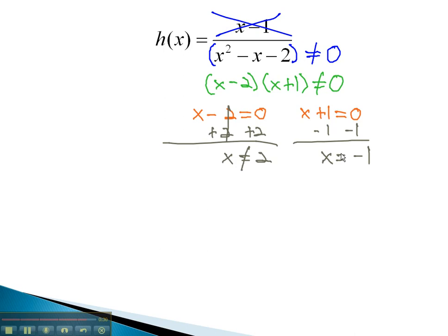We'll say that x cannot equal 2, and x cannot equal negative 1, because if we were to plug those values into this function, we would end up with 0 in the denominator, and that would be undefined. Domain is a list of what keeps the function defined, whether we're saying what x does not equal, or whether we're saying what x is greater than.